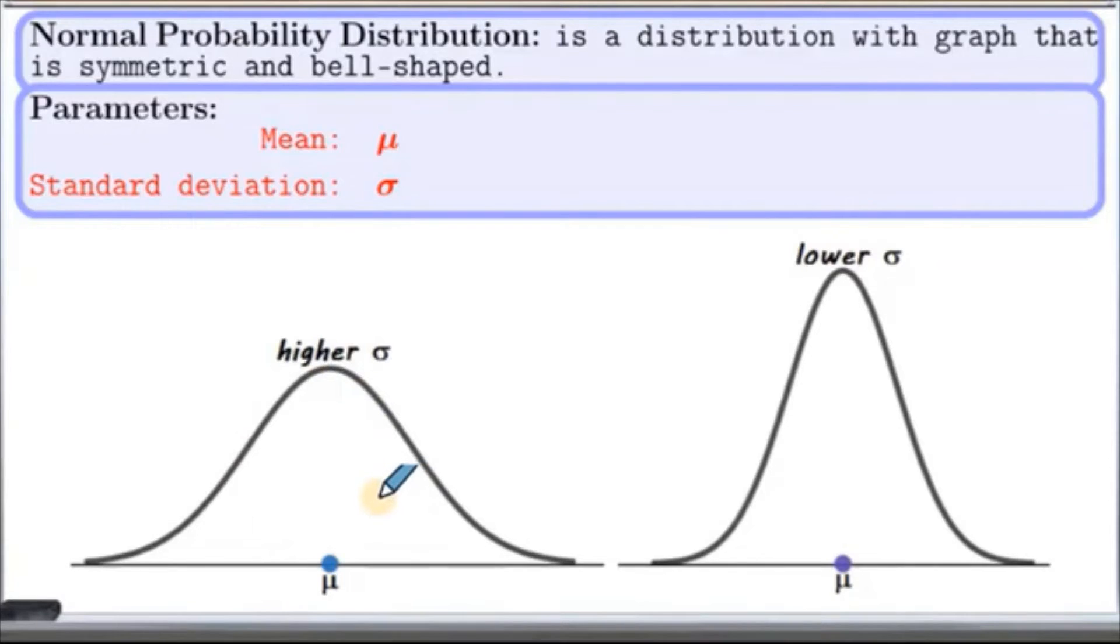Whereas on the other hand, lower standard deviation means data is less spread out and the distribution cover less value. Therefore the graph looks thinner like this, like this one here.